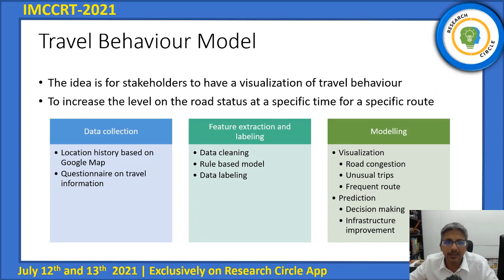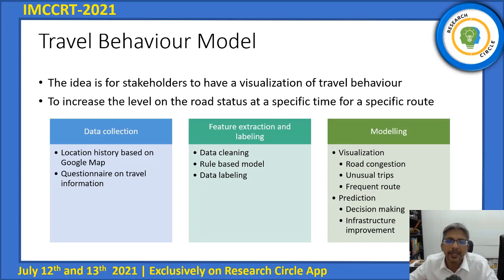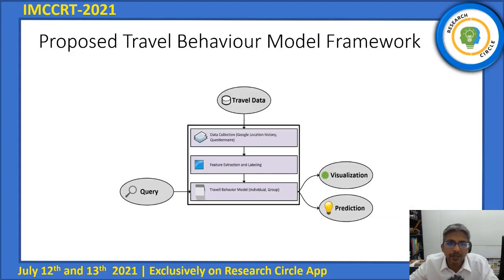As a result, the travel behavior model is developed, and its variables contribute towards stakeholders having a visualization of travel behavior in urban cities. The model has three components: data collection, feature extraction and labeling, and modeling. The data collection component collects commuters' data based on GPS location history and self-provided feedback via travel survey. The collected data goes through data cleaning to obtain usable data and dismiss missing information. A rule model is then applied to define the GPS dataset, each behavioral data is labeled to facilitate modeling, and the modeling is showcased in two folds — visualization and model prediction.